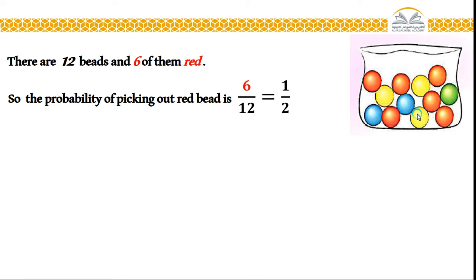So I have 12 possibilities. I have 12 beads, and 6 of them red. From this 12 possibilities, I have 6 possibilities to take red. So the probability of picking out a red bead is 6 from 12, or 6 over 12.